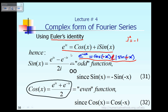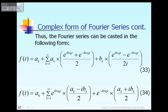As mentioned, cosine is an even function — if you change the angle x to plus or minus x, the cosine doesn't change value. On the other hand, sine of an angle x is an odd function — if we change the sign of x, then sine of x will also change sign. Based on that fact, the Fourier series from earlier can be expressed in a different form.